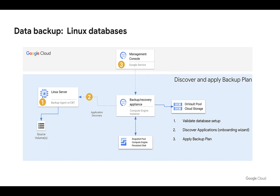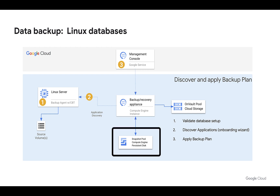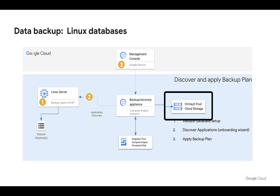There are a few things we need to do to set the scene. We obviously need to install the backup and DR service, which will give us our management console running as a service. We also need to deploy a backup and recovery appliance into one of your projects, which runs as a Compute Engine instance. That appliance will do the work of creating the backups, and will have a snapshot pool based on persistent disk. We should also have an on-vault pool, which uses Google Cloud Storage to hold our long-term backups.